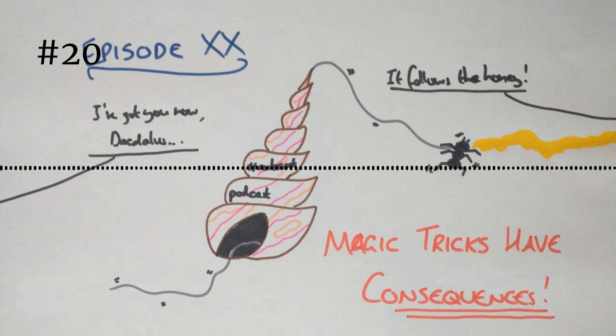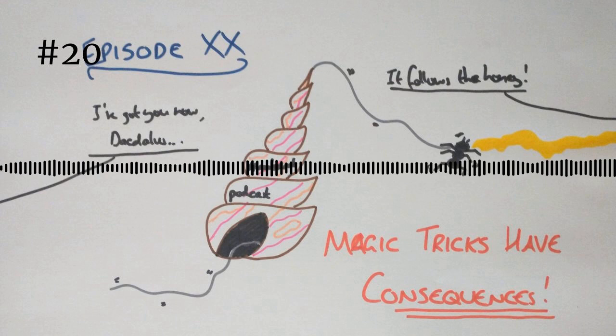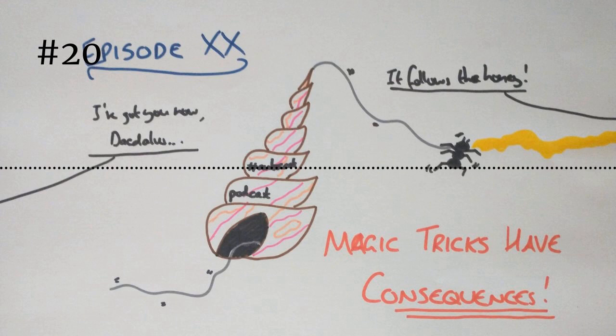So last time we left off with Minos II heading towards Sicily to deal with Daedalus. Do you remember that? I do. Perfect. Well, we're picking up from here. We're first going to polish off some extra details from our saga over the past two episodes, which I got thanks to Apollodorus.